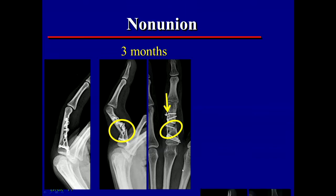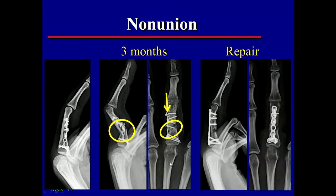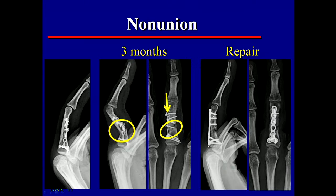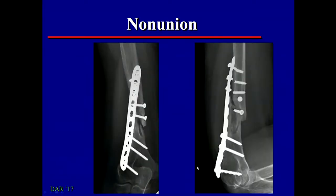We can treat a non-union with a non-union repair, which involves removal of the prior fixation, removal of the new cortex that's formed along the bone ends, bone grafting, and new internal fixation. Here's another non-union where all the fixation has failed — not because it was faulty, but because the fracture itself did not heal.